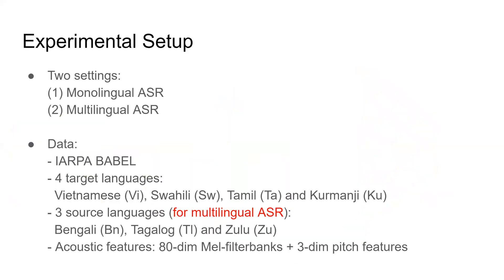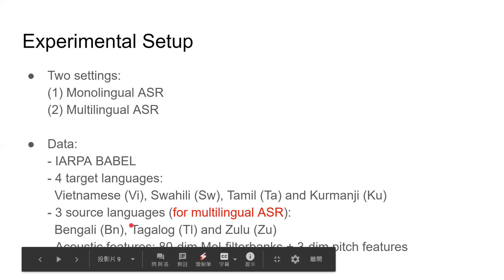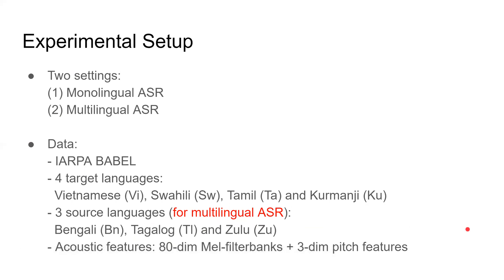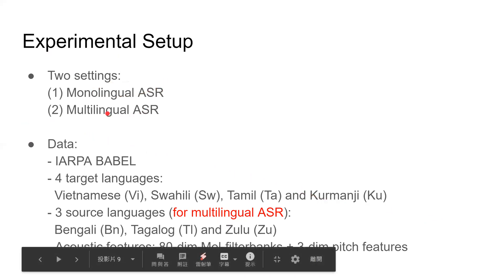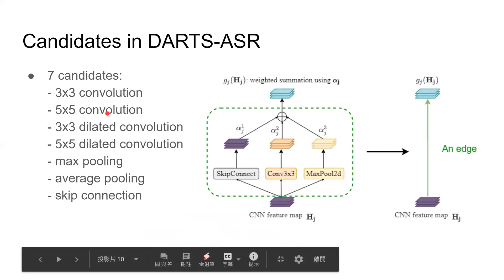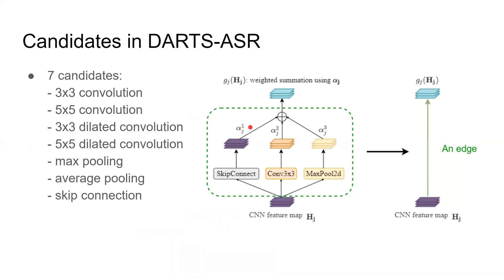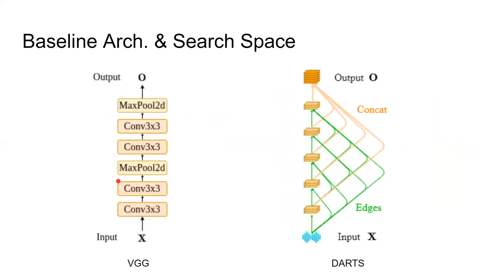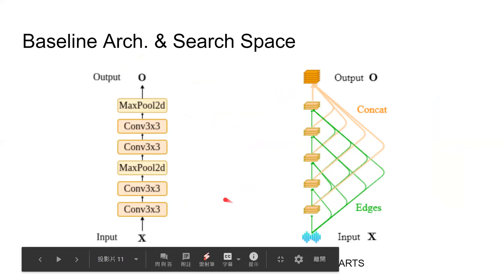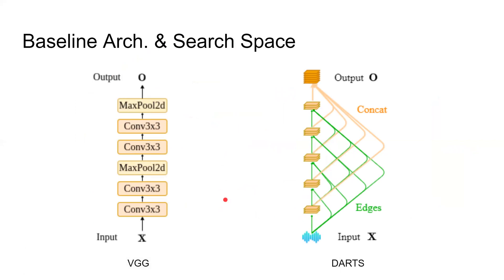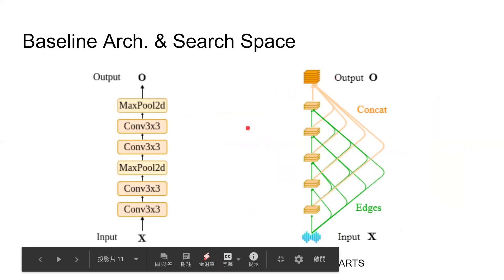In our following experiments, we have two settings, monolingual and multilingual ASR. The dataset is the multilingual corpus Babel. We use four target languages in Babel for training and testing. And in the multilingual setting, three additional languages are used to pre-train the model. The acoustic features are 80-dimensional mel filter banks and three-dimensional pitch features. I will describe the two settings in more detail later. And there are seven transformation candidates used in DARTS in this paper, including standard convolutions, dilated convolutions, max pooling, average pooling, and skip connection. The fixed architecture VGG is commonly used in ASR models, so it serves as our baseline. To match the depth of VGG, our search space of DARTS consists of five intermediate feature maps.